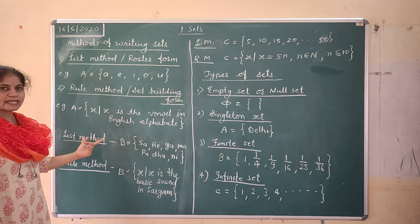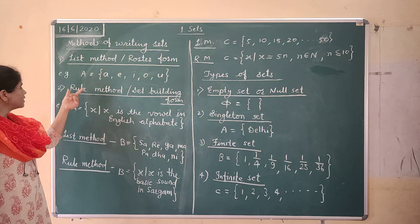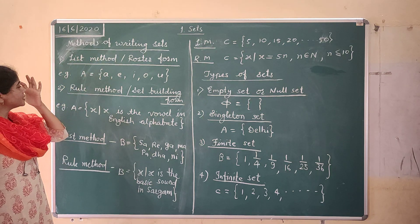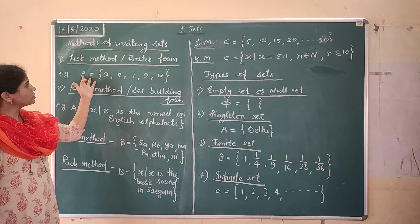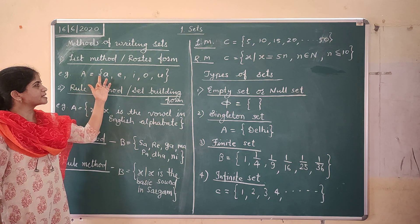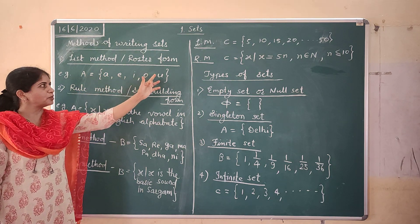Now we will see examples. So first see here, here one example is written in list method. So set A is having objects A, E, I, O, U.